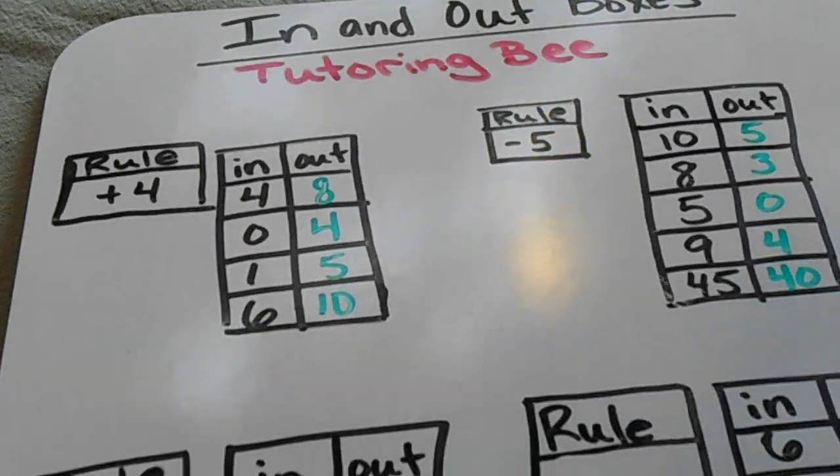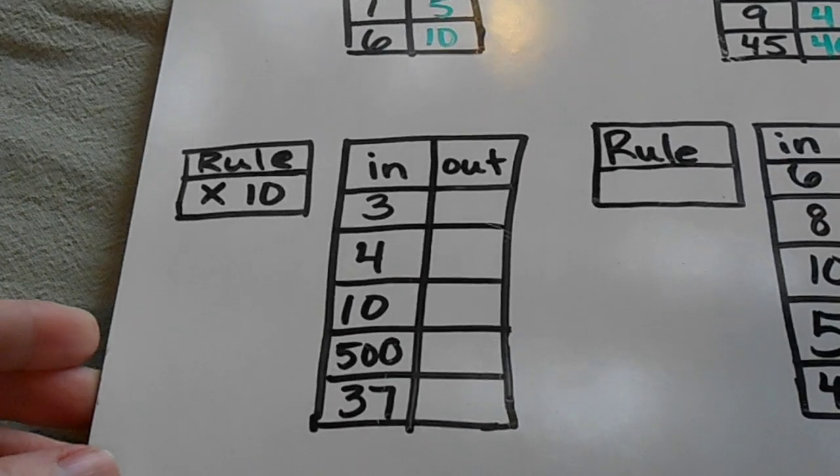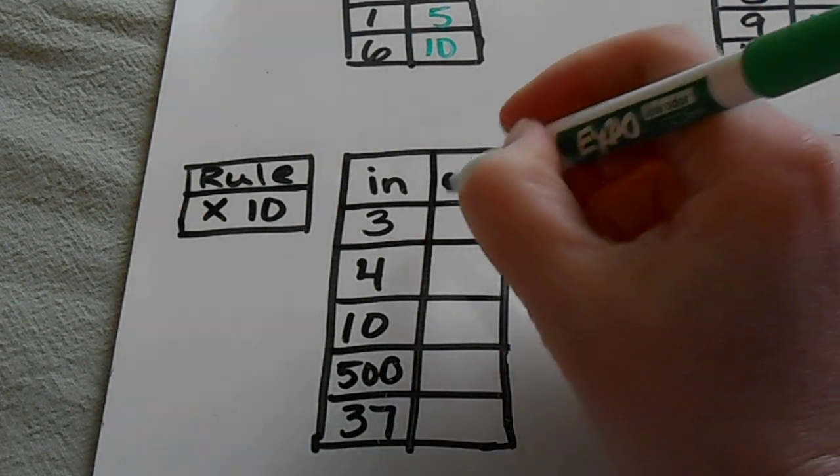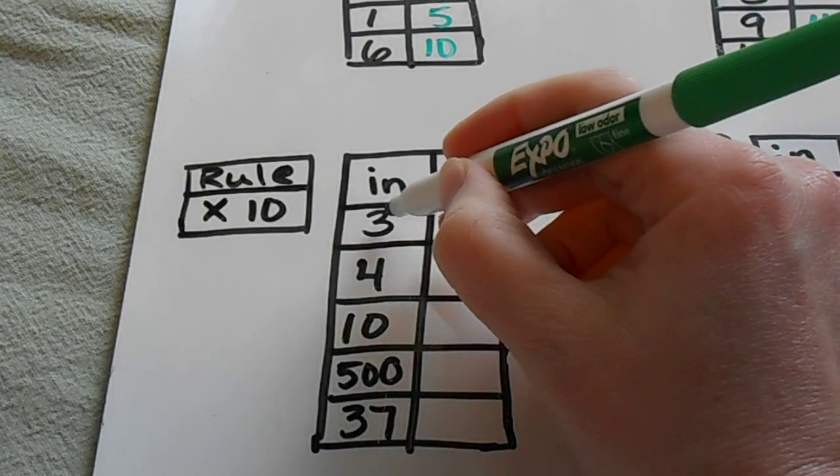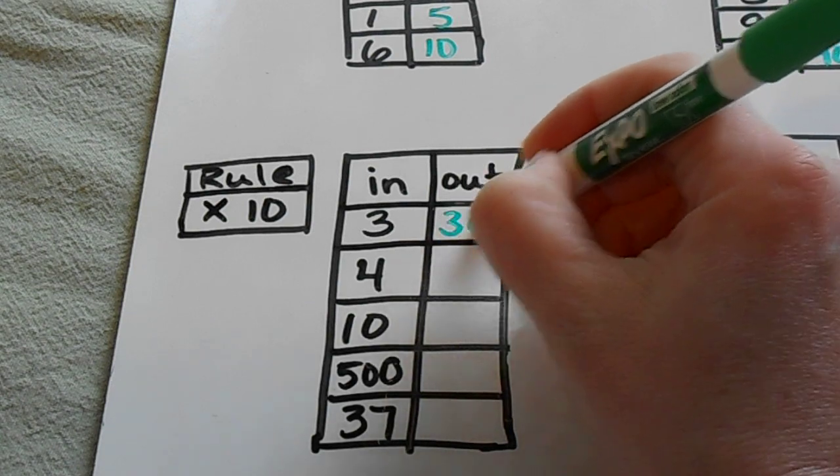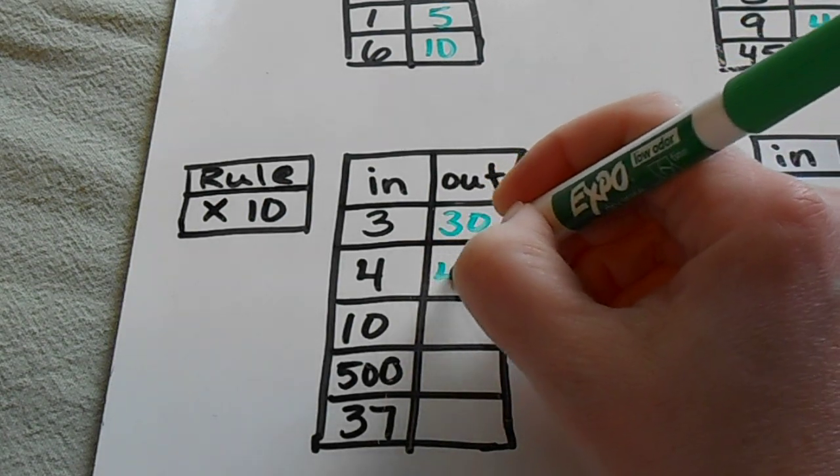It can work for the other operations as well, like multiplication. So our rule is to multiply times 10. Whatever this number is, we're just going to multiply that times 10 and write it over here on the side.